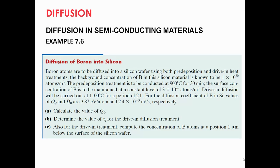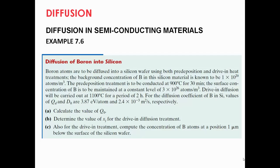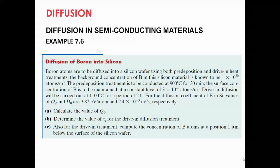Hi, let's have a look at an example related to diffusion in semiconductor material. This is Example 7.6 of your book, Callister. In this example, we are given information about pre-deposition and drive-in heat treatments in semiconductor materials, and we are asked to calculate certain parameters.